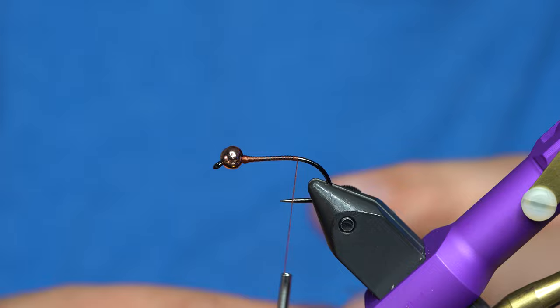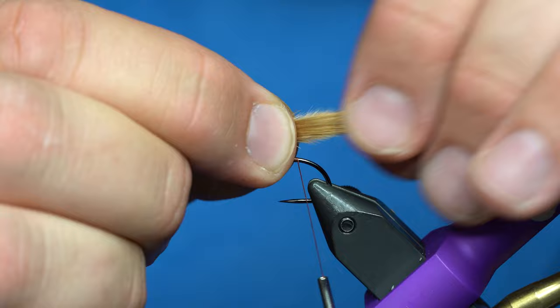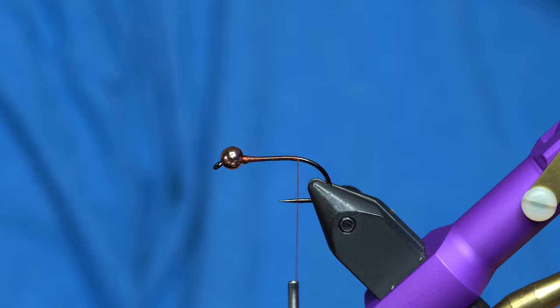We'll just take a piece of marabou. I've just pulled the marabou off the stem. And I want to use those fine points. You can see they're not all even. That's perfect. And I'll want the tail to be roughly that long.